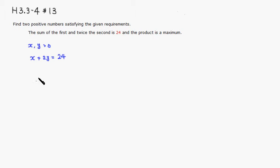Then we want to maximize the product. So we want to maximize the product. I'm going to call that f of x, and the first I'm going to write it as x times y.